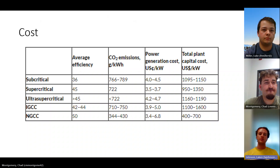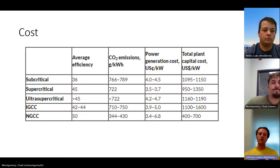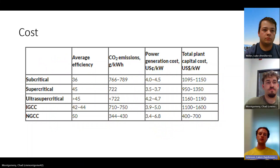When evaluating the economics of power plants, many factors need to be accounted for. Looking at the table, we can see the average efficiencies, CO2 emissions in grams per kilowatt hour, power generation costs in U.S. cents per kilowatt, and total plant capital cost in U.S. dollars per kilowatt. Since fuel is the largest expense to keep a plant operating, understanding the efficiency of the plant and the fuel cost trend significantly impacts the economics.